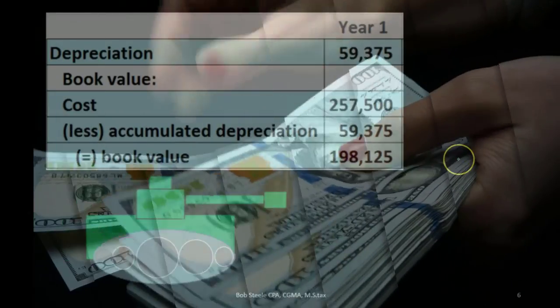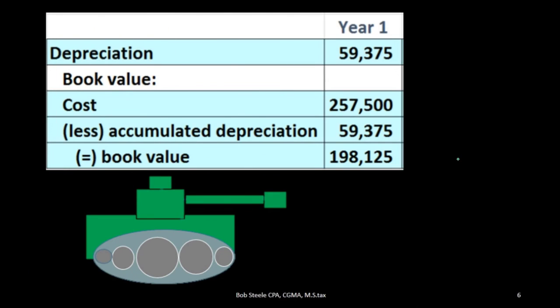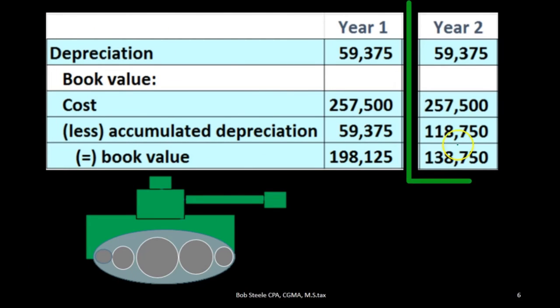For example, in year two we'll have the same depreciation expense as year one, but the accumulated depreciation will go up from the $59,375 in year one plus another $59,375 depreciation expense, accumulating the total depreciation to $118,750.